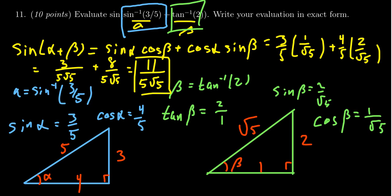But for full credit you need to have this as the exact form, eleven over five root five or something equivalent to that. And you also need to show these type of right triangle diagrams on how you unravel this thing to get eleven over five root five.